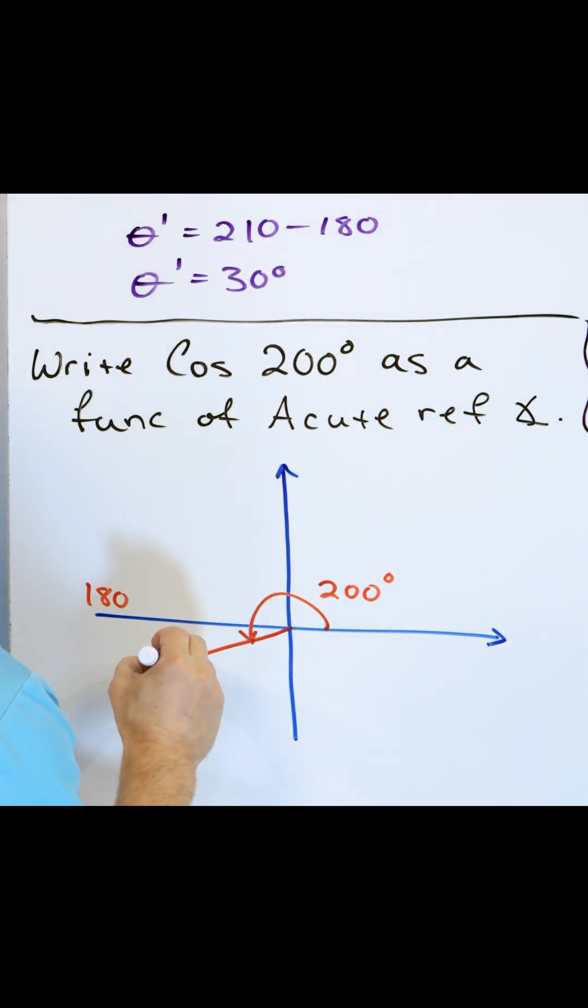It's the angle to the nearest x-axis. This angle right here, we call it theta prime, the reference angle, is actually 20 degrees.